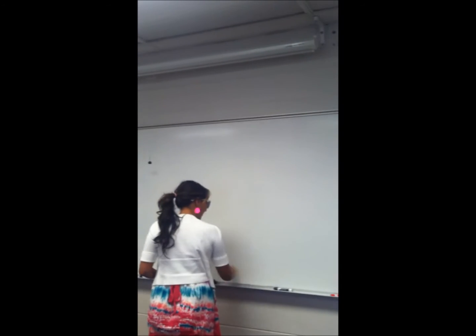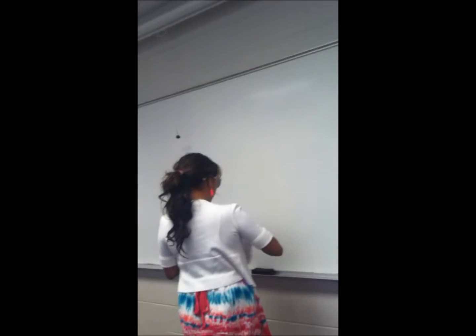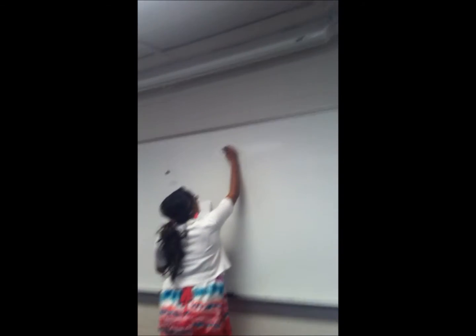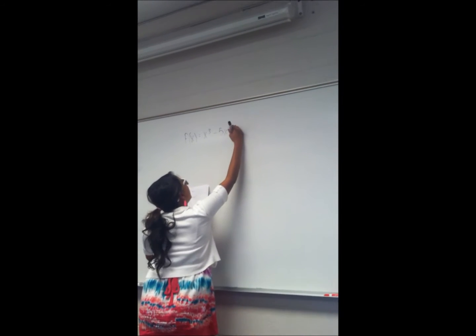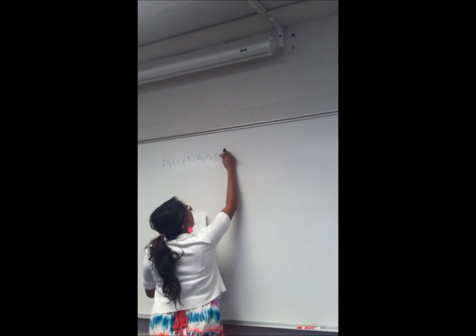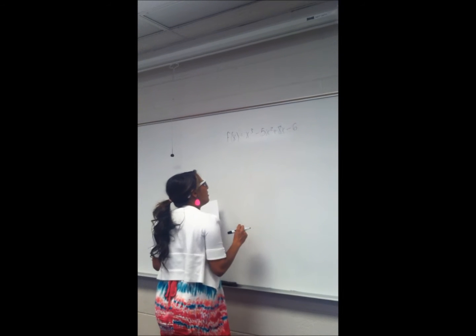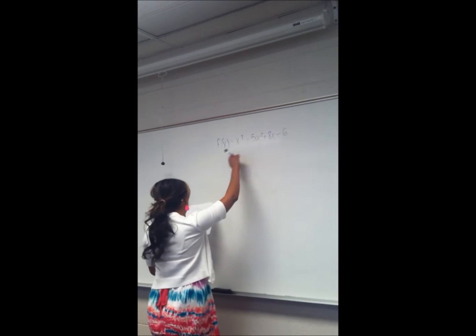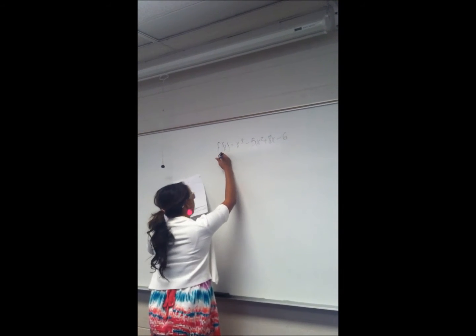Wonderful. Can you explain how you got that answer? So first, to find the real zeros of the problem, we have to use negative six over one, which is the rational zero theorem. So what we're doing is finding the possible rational zeros of f of x.